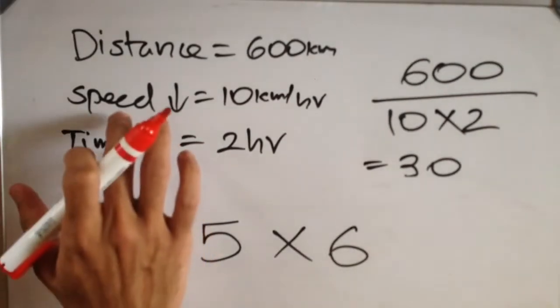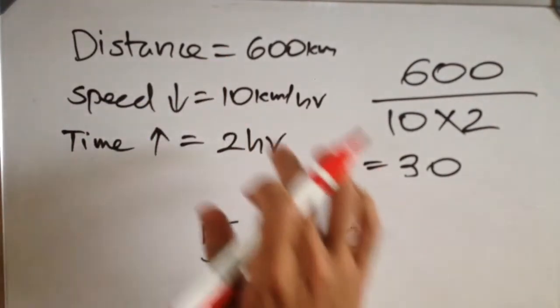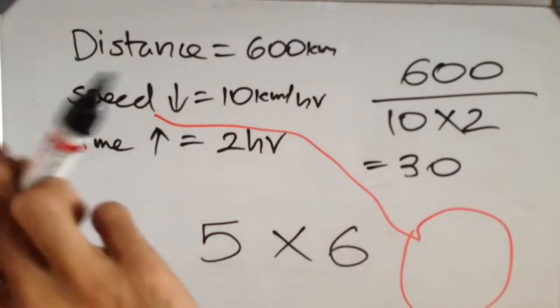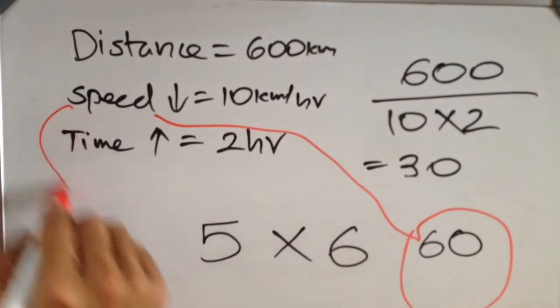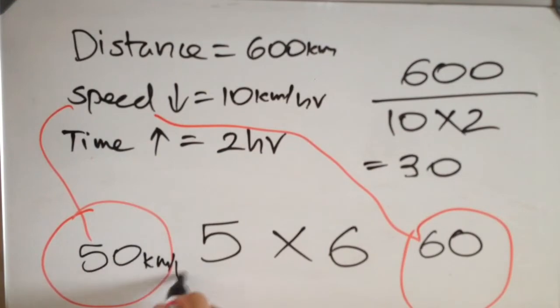Now if we have to find out the actual speed, the actual speed was greater. So we have 6 into 10, we have 60 as the actual speed. And the reduced speed will be 5 into 10, so we have 50 kilometers per hour.